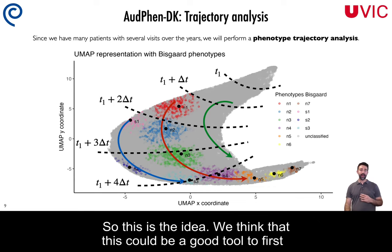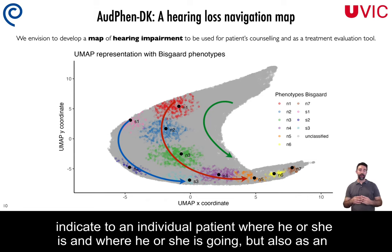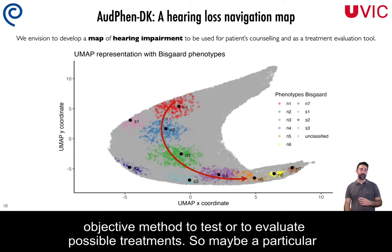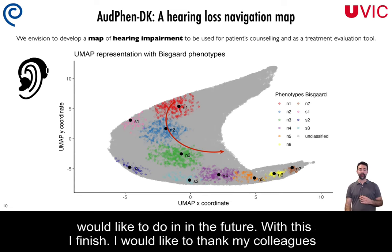We think this could be a good tool, first, to indicate to an individual patient where he or she is and where he or she is going, but also as an objective method to evaluate possible treatments — for example, whether a particular hearing aid or some other treatment produces a change in this trajectory.